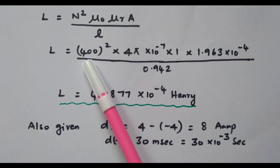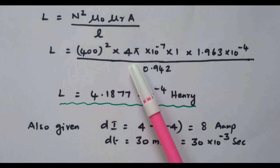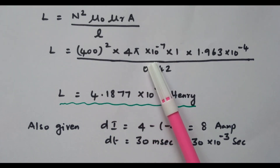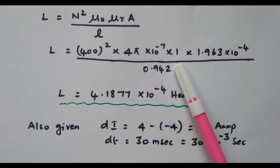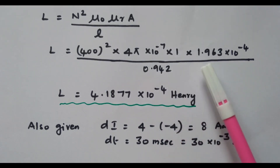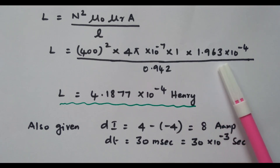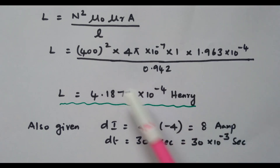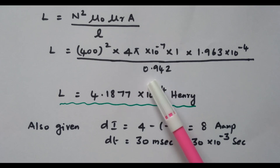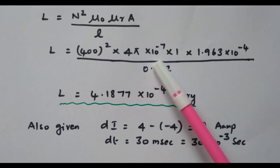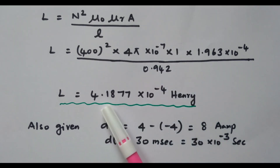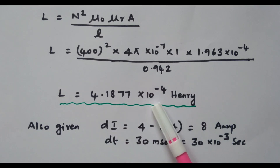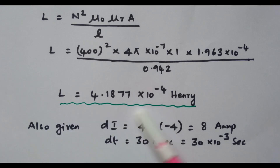Now we substitute the values. N² = 400² = 160,000. μ₀ = 4π × 10⁻⁷. μᵣ = 1 (air). Area = 1.963 × 10⁻⁴ m². Length = 0.942 m. By simplifying, L = 4.1877 × 10⁻⁴ Henry. So now the inductance is calculated.